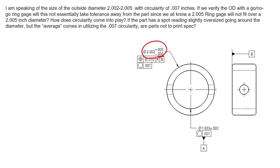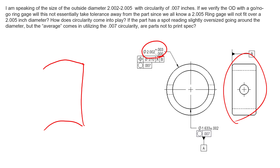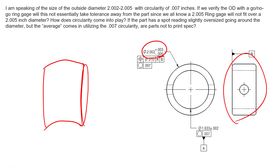If we picture this cross section and our cylinder has a bit of bow to it — it bows a little bit — we need to make sure that bow in size and form doesn't deviate beyond an envelope of perfect form at MMC. That's exactly what the standard is telling us, and Rule Number One is applied by default to every feature of size.